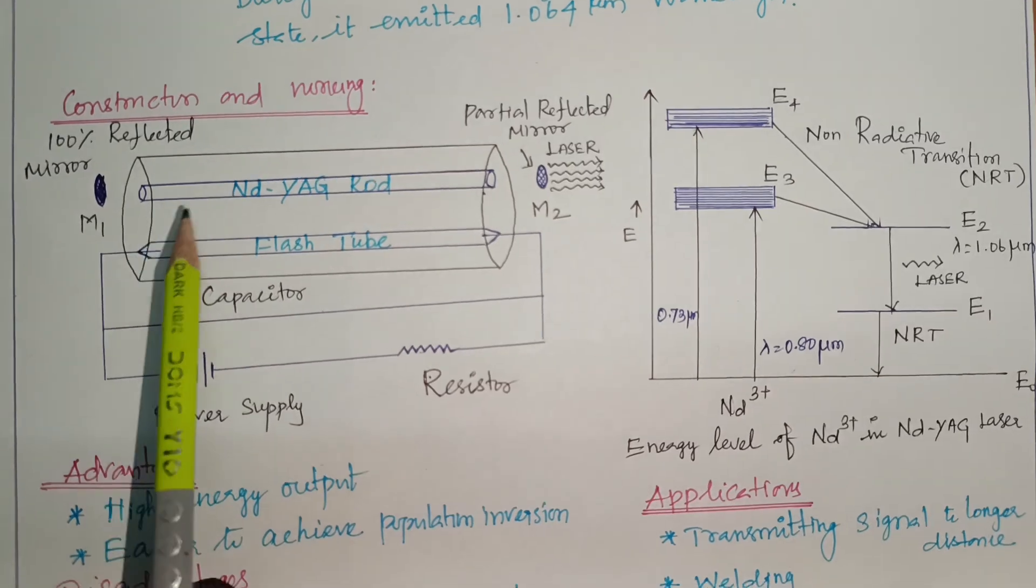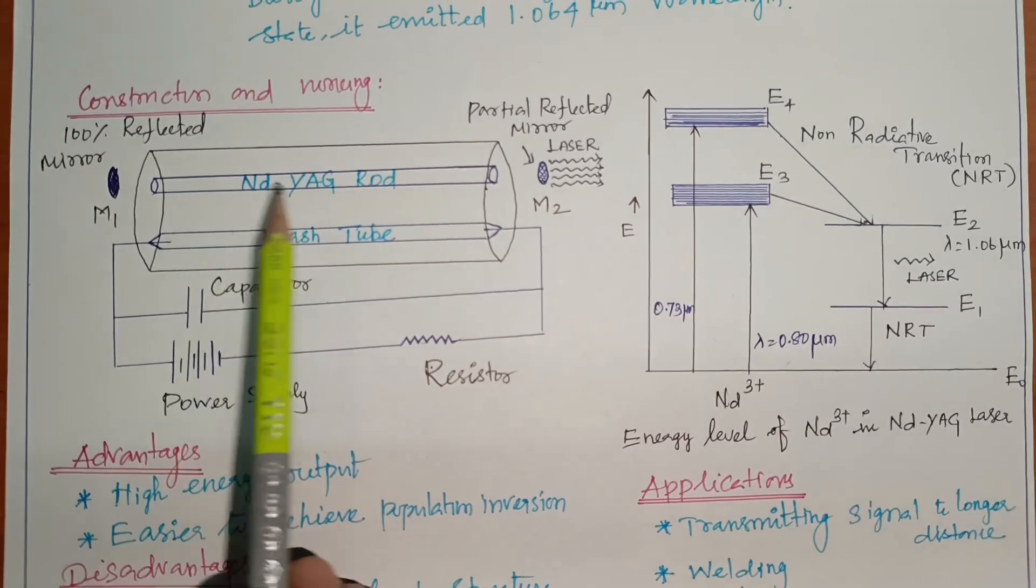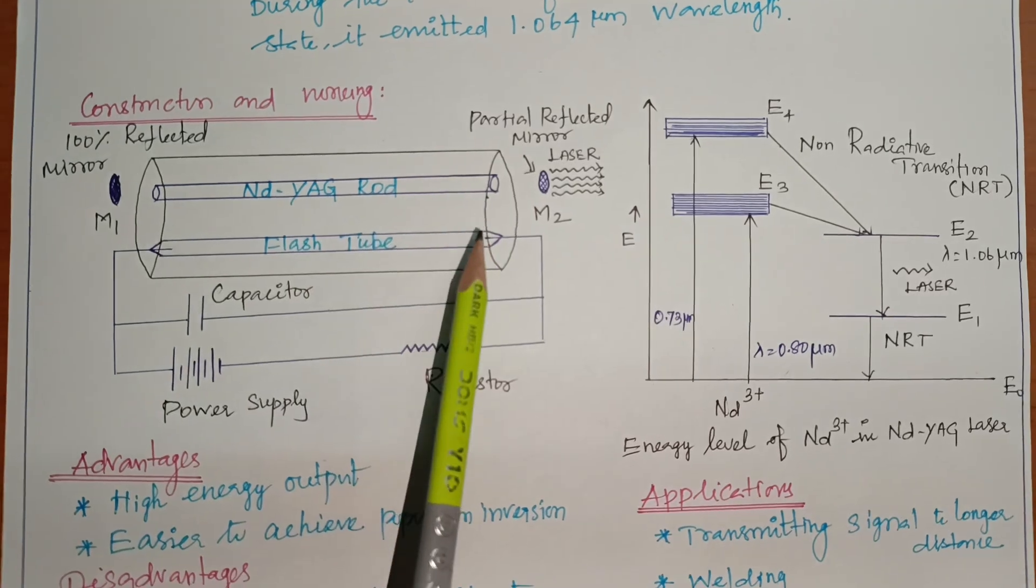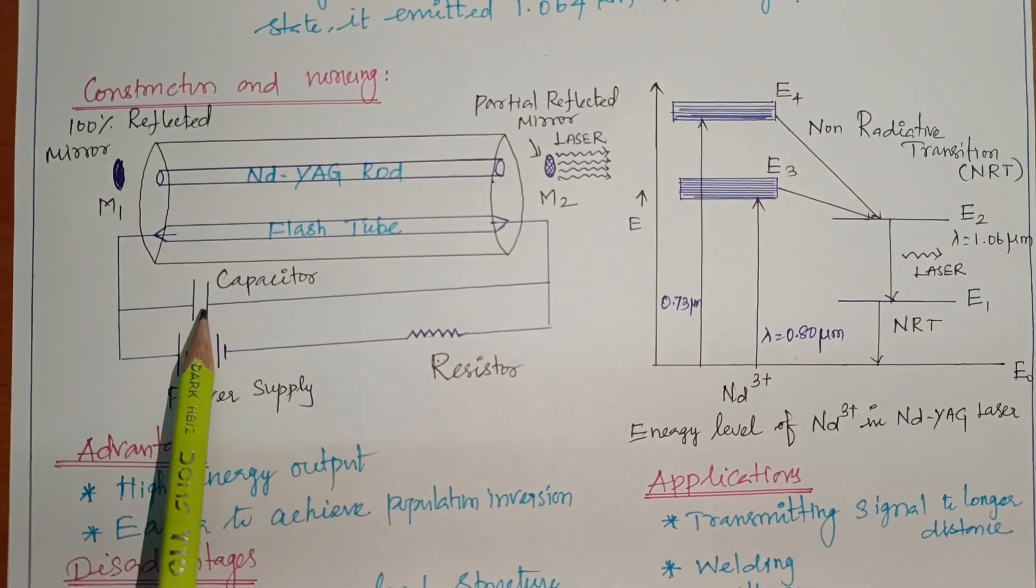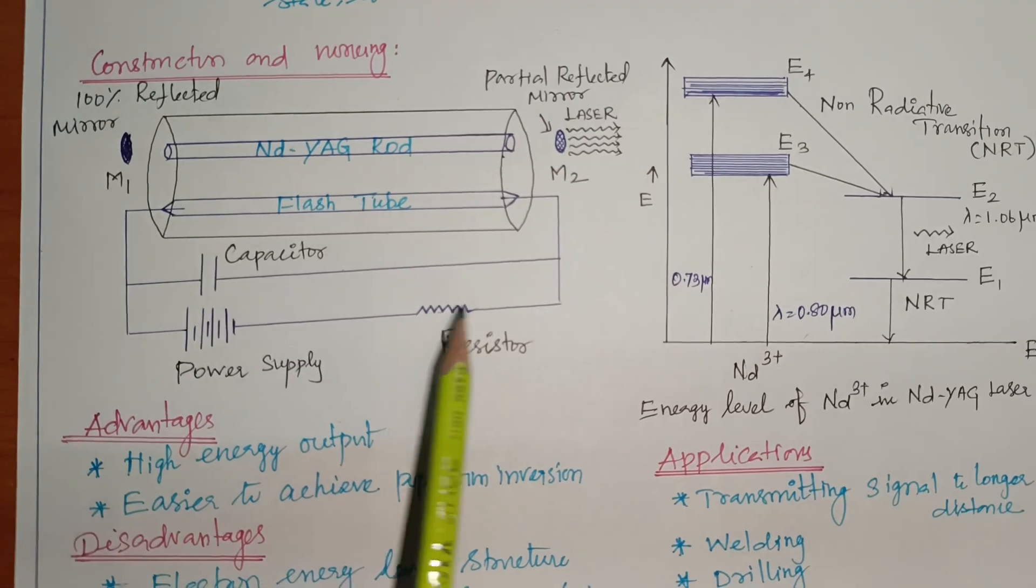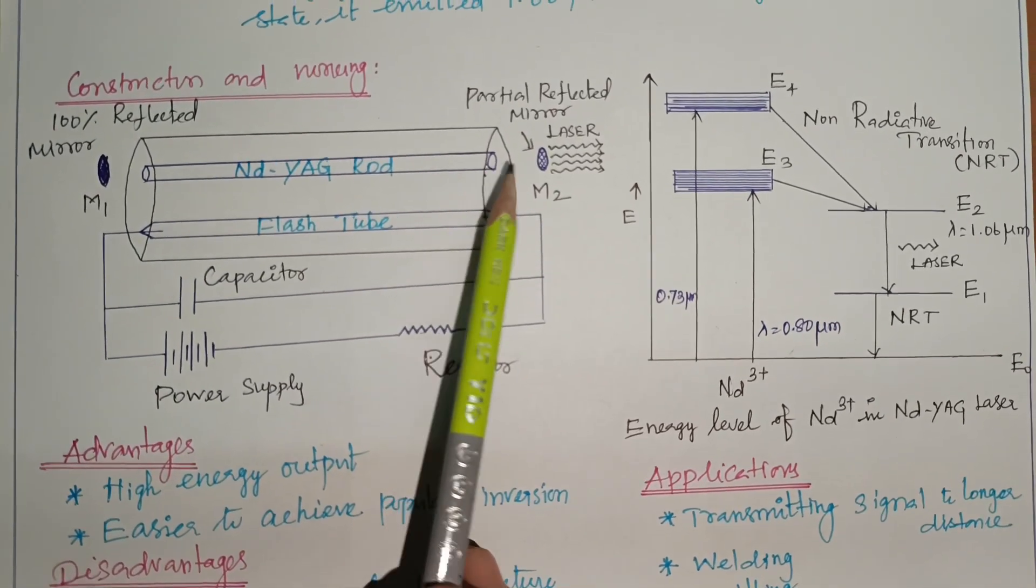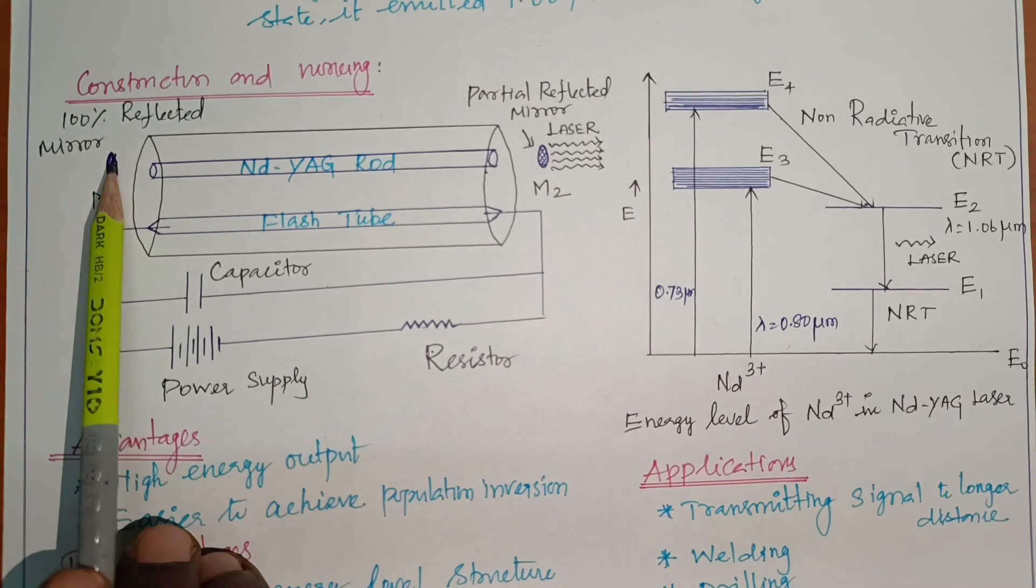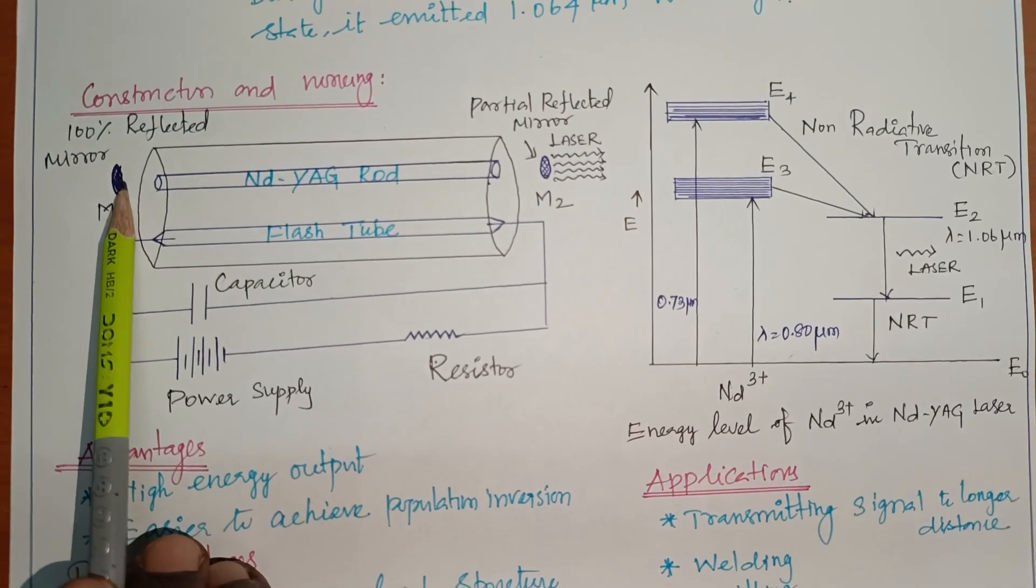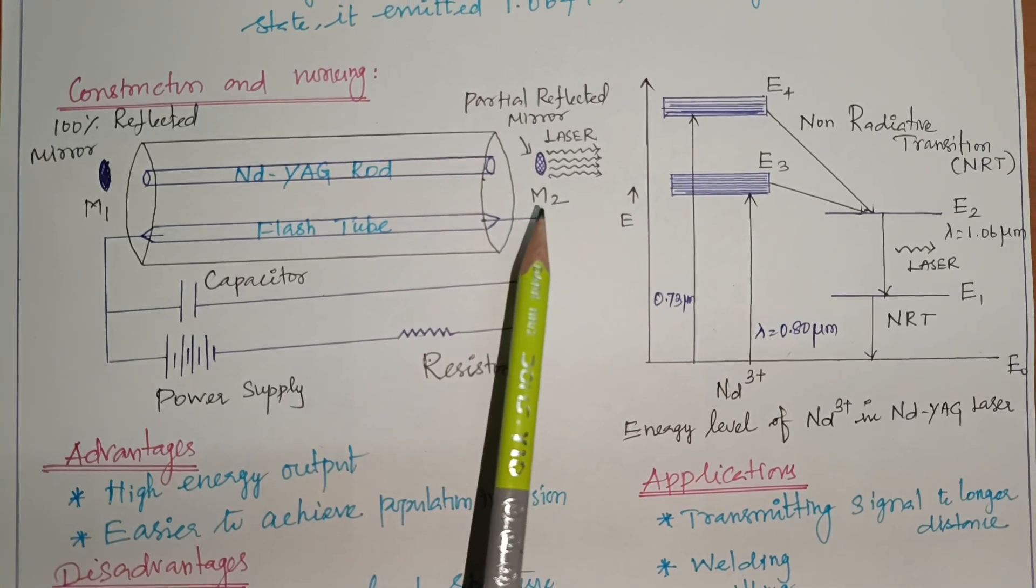So construction short. So we are taking Nd:YAG rod. And the flash lamp is kept in the elliptical cavity. And which is connected with the capacitor. And sufficient power supply. And both end of the rod is well polished. And to keep the two mirrors. One is optical fully reflected mirror. And the other one is partially reflected mirror. So construction is done.